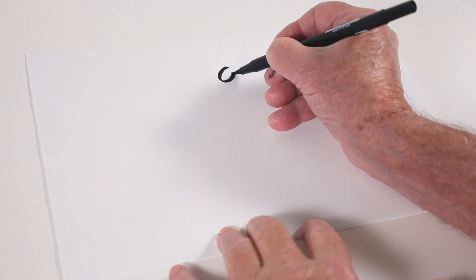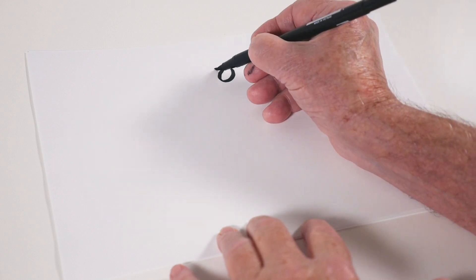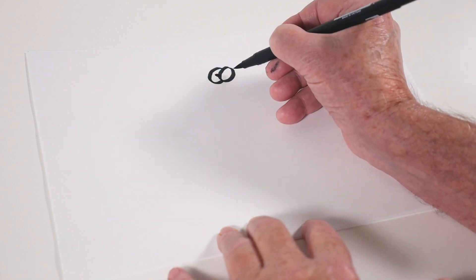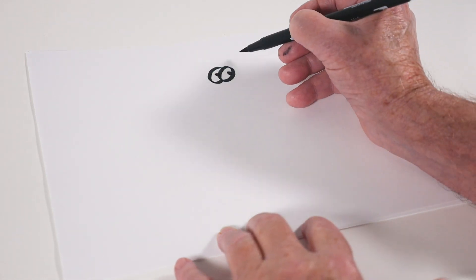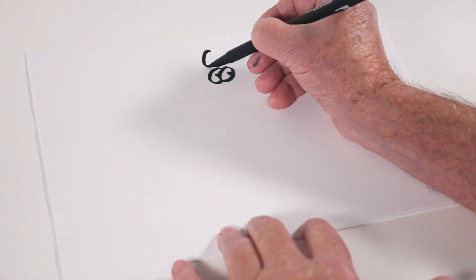Then I'm going to draw two eyes. They're looking at us. Then I'll put a little bow up here.